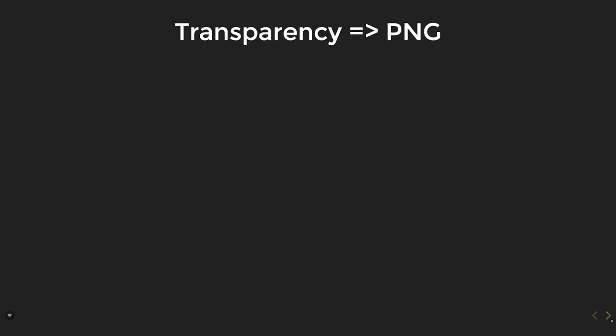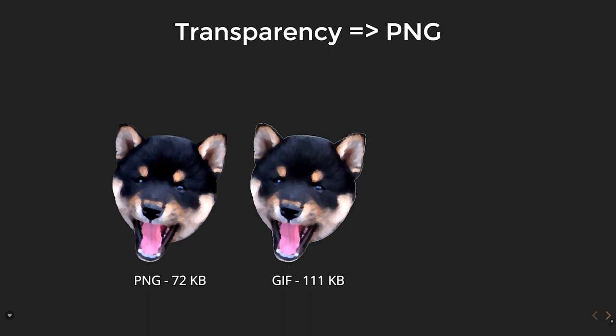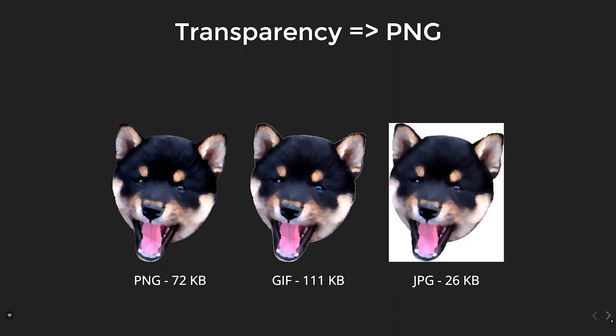If you need transparency, PNGs are usually the way to go. Here's an example — it's 72 kilobytes. If you do that in a GIF, it's not much bigger, but GIFs only have on or off on the pixels — either transparent or not — so you get a little halo around it because you don't get the variation in color needed on soft edges. And if you do a JPEG, you just get a big box behind it. So PNGs are the way to go for transparency.